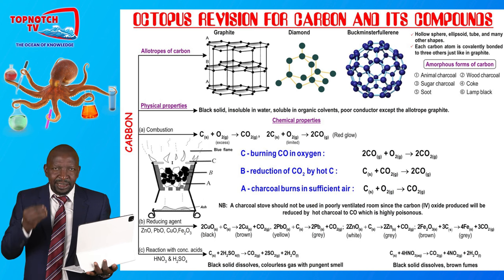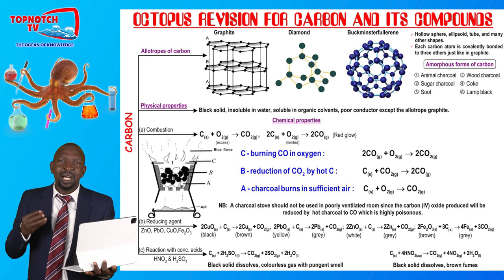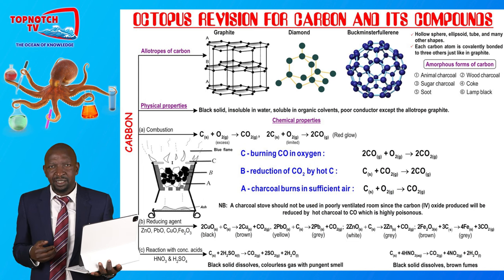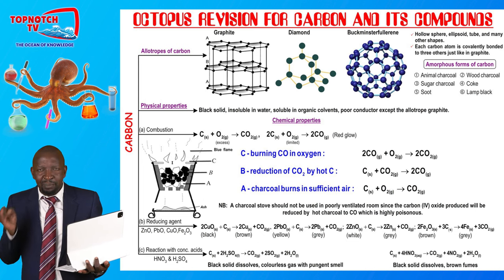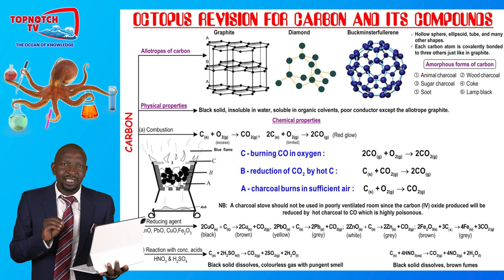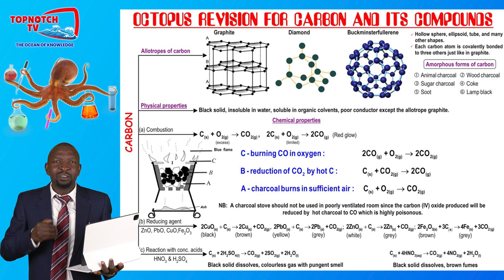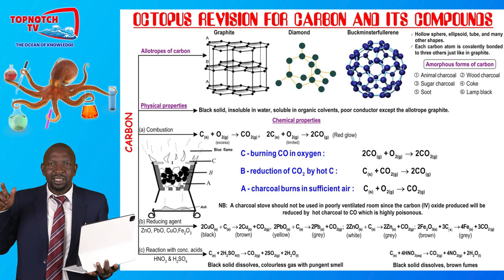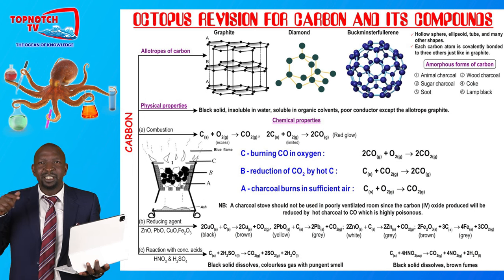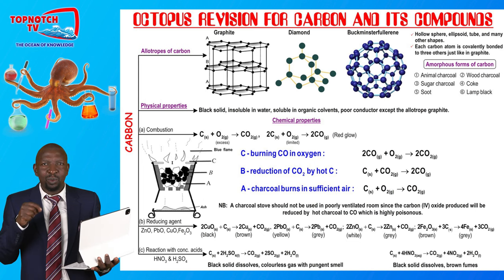Remember, for both uses of graphite — as a lubricant and in manufacture of pencils — the statement is similar: graphite is made up of hexagonal carbon layers which slide over each other. But when asked why it is used as a lubricant, mention that the hexagonal layers are held together by weak van der Waals forces, hence they slide over each other. For pencils specifically, add the words 'when pressed' to earn that marking point.